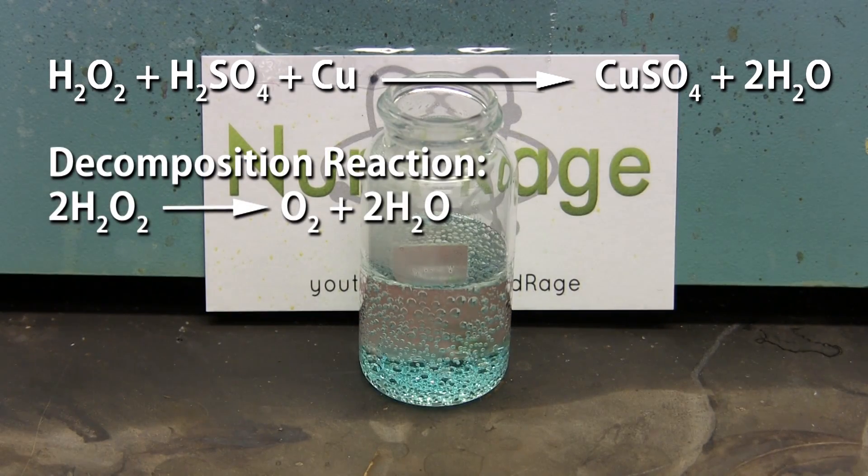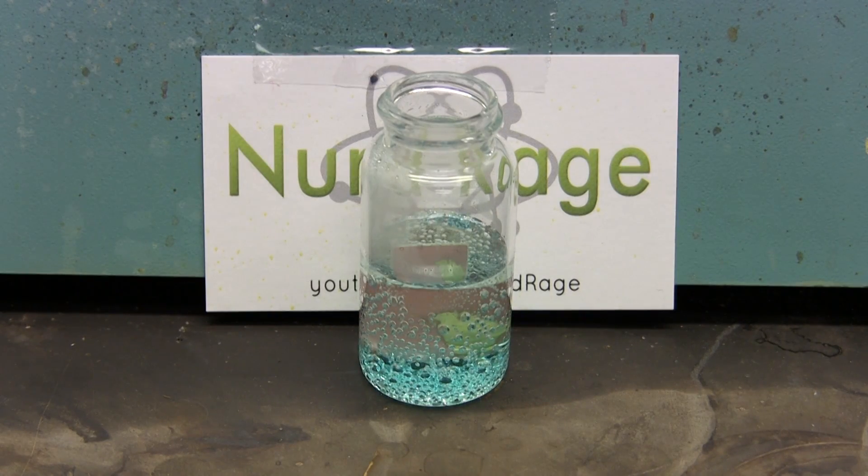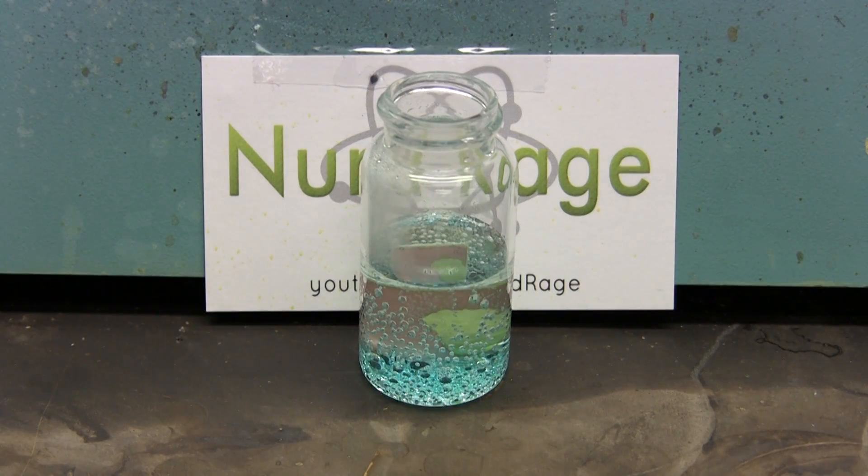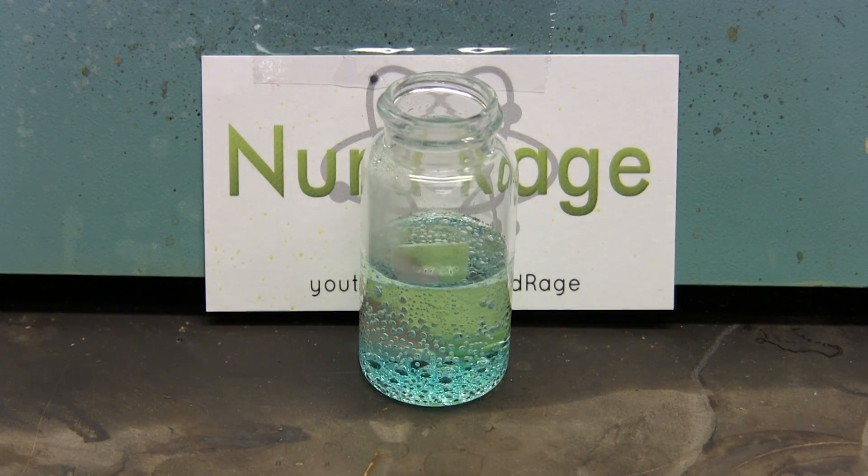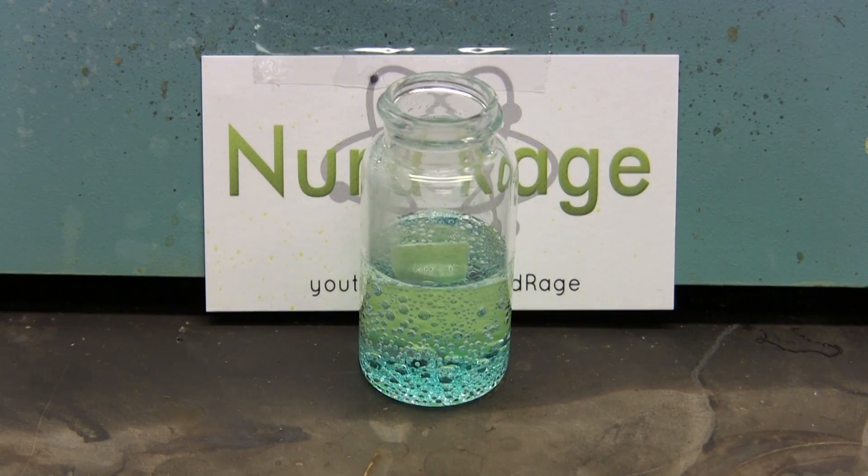Like other peroxide etchants this one also decays in storage and loses strength. But an advantage of this method is that the copper sulfate can be converted back into sulfuric acid and copper metal, making this etchant very easy to recycle.